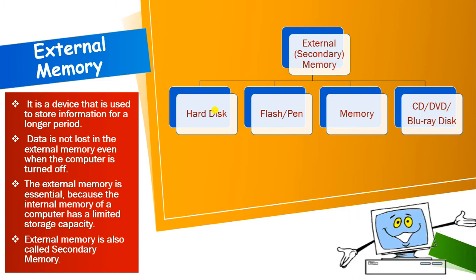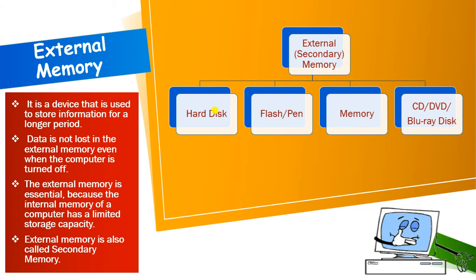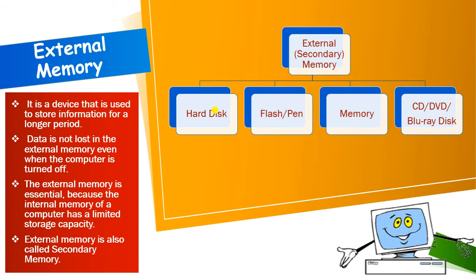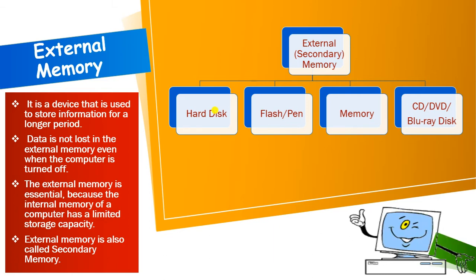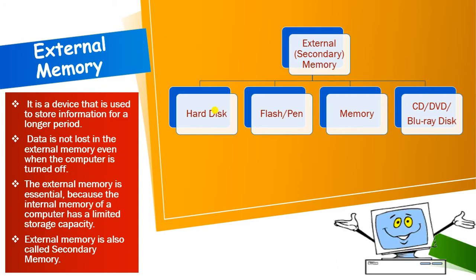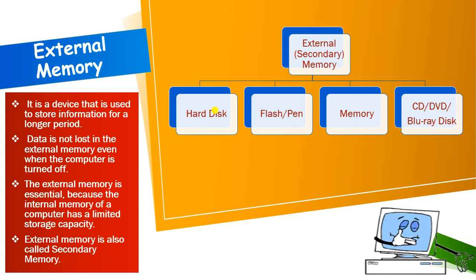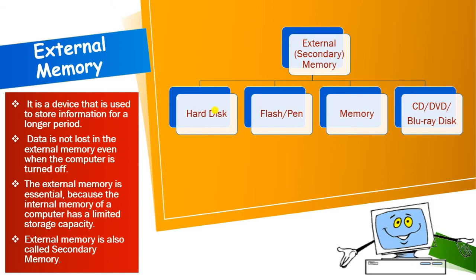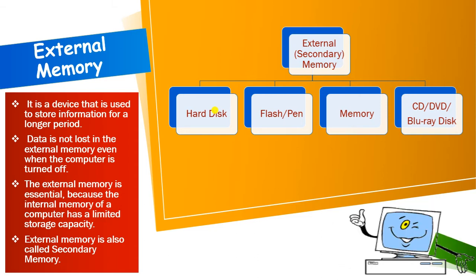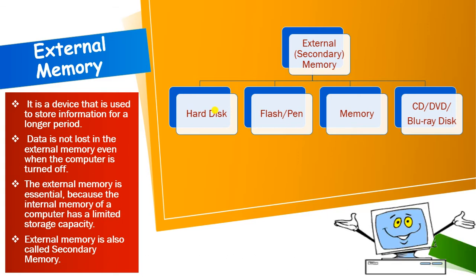External memory is essential because internal memory is too small. Whenever you want to store more information than internal memory allows, you need a device — that is external memory. External memory is also called secondary memory. The parts of secondary memory include: hard disk, flash drive, pen drive, memory card, CD, DVD, and Blu-ray disk. We will study all these external memory devices one by one.